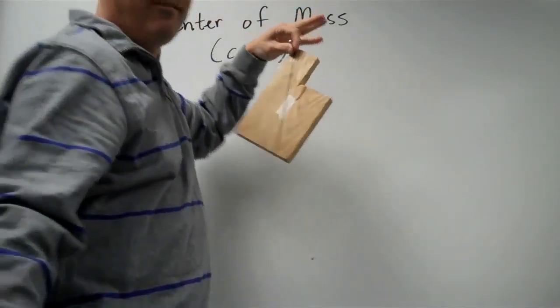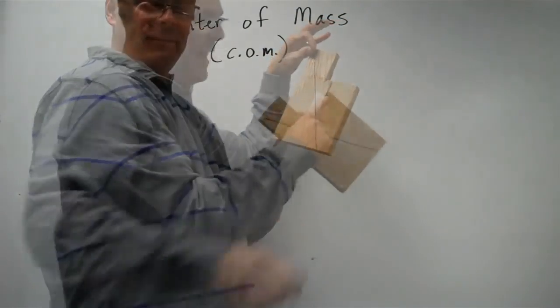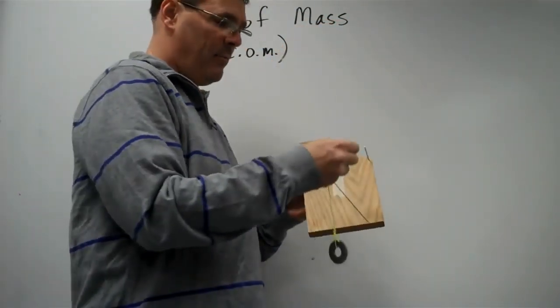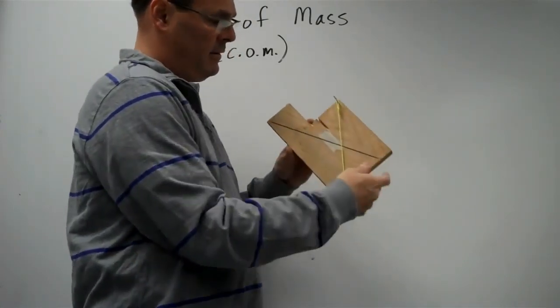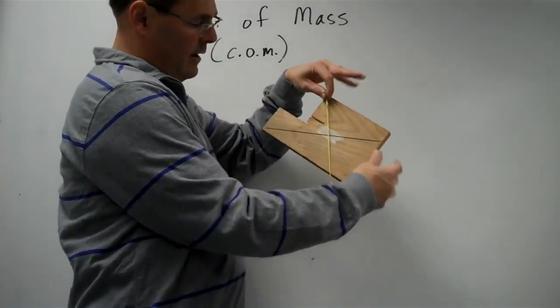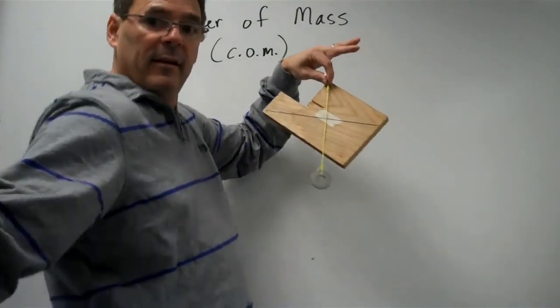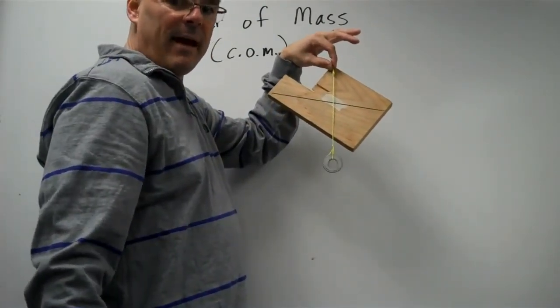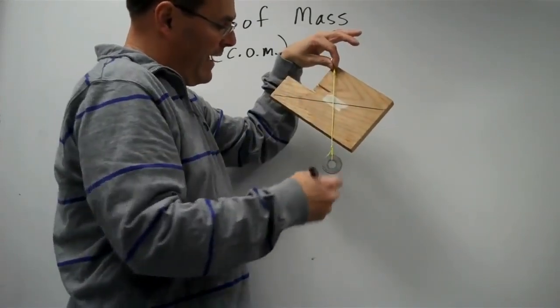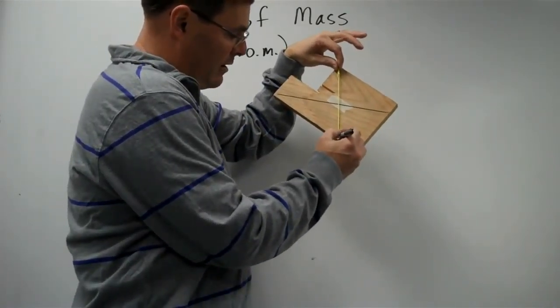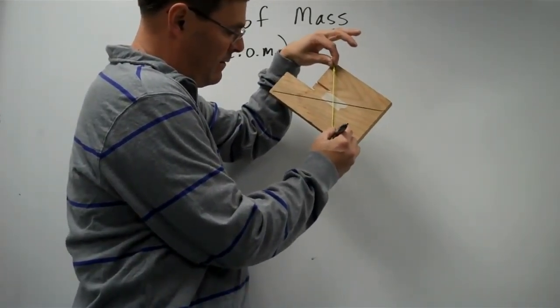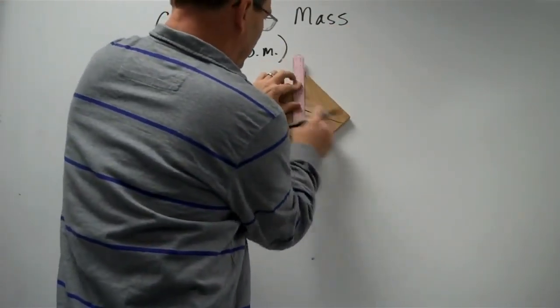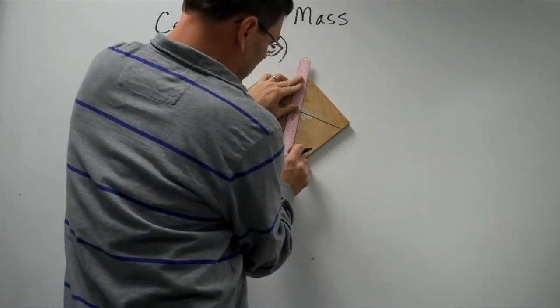So now I know the center of mass is somewhere along that line. Now I've moved the nail to another spot on the board. Again, I'll put my plumb bob on the nail, I'll hang the board from the nail, and I know that my center of gravity is somewhere on that vertical line. So I'll draw another dot where the line is. I'll connect the space between the nail and the dot with my ruler.